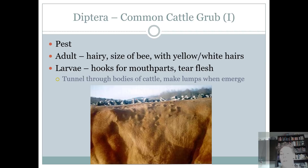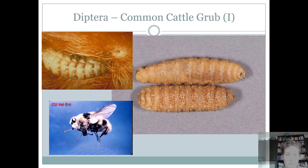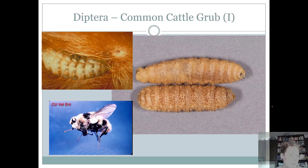If you're going to use that cow for meat production or dairy, the grub is stressing it out so it can't consume as much food, put on the weight you want, or produce the milk you want. It also ruins the hide. They're a major pest. What characterizes a fly larva is that you don't really see a separate head on either end. When we get into caterpillars — the lepidopterans — they actually have a head. So if you see a maggot-looking thing without a head, it's most likely the common cattle grub on that contest.